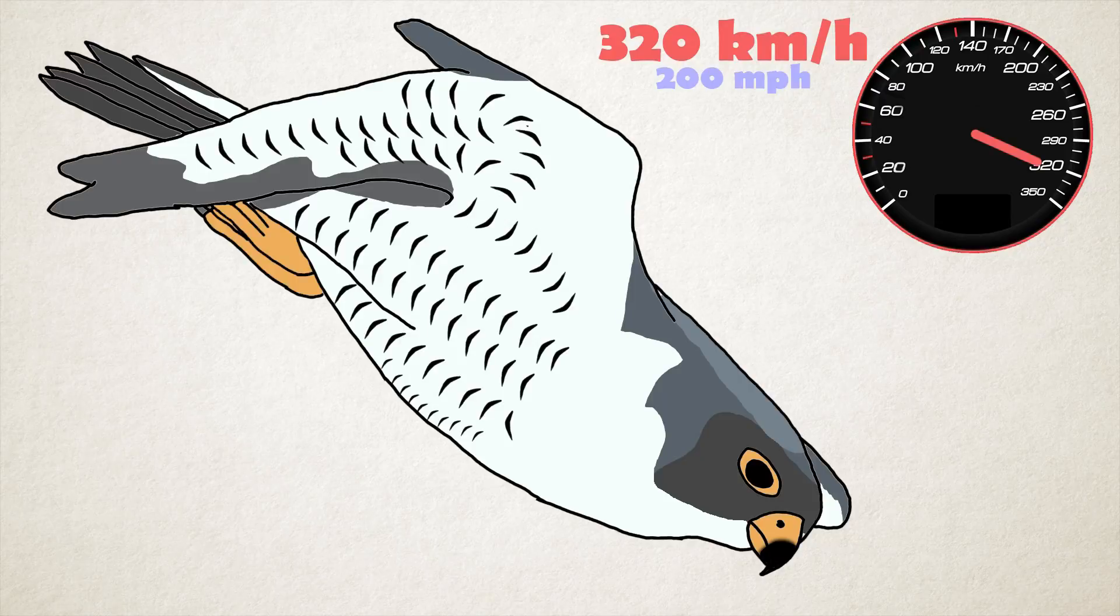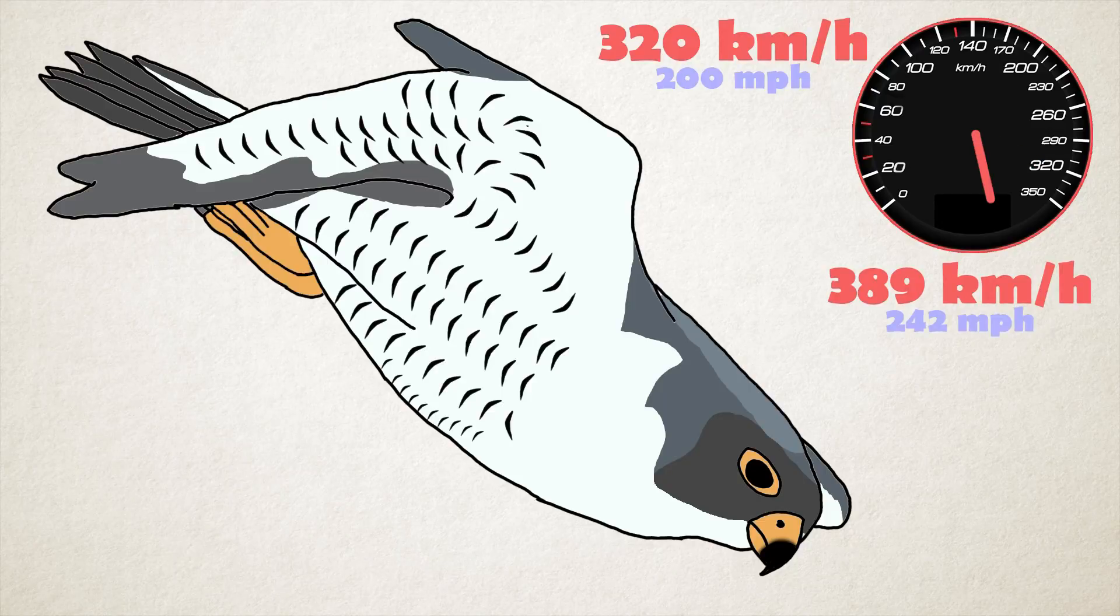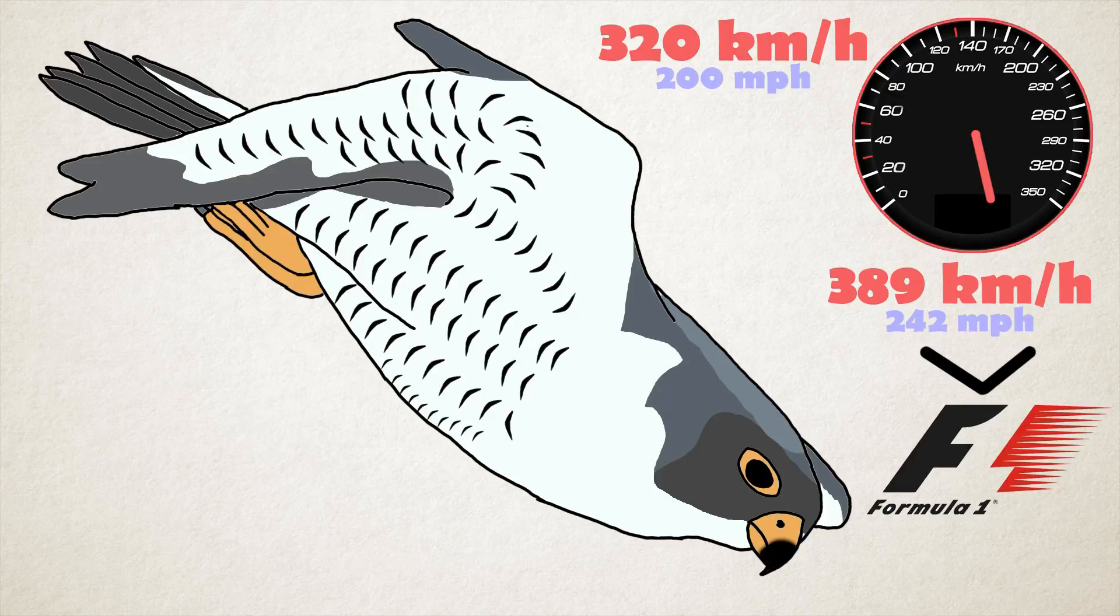reaching over 320 kilometers per hour, making it the fastest member of the animal kingdom. According to a National Geographic TV program, the highest measured speed of the Peregrine Falcon is 389 kilometers per hour. That's more than the highest top speed of a Formula 1 car.